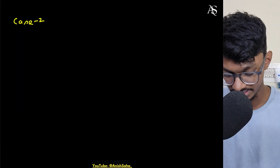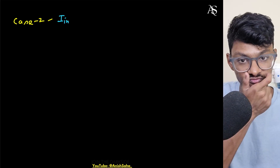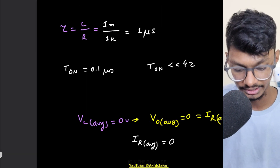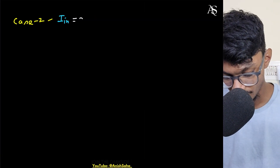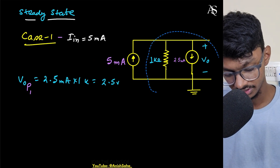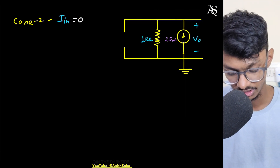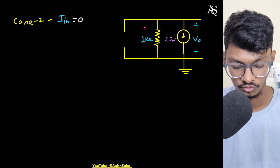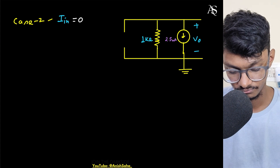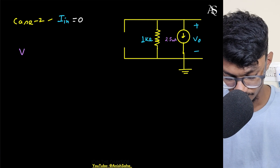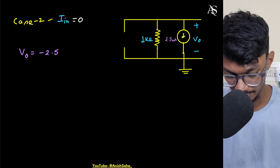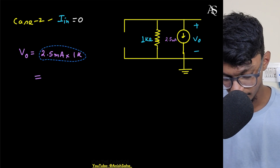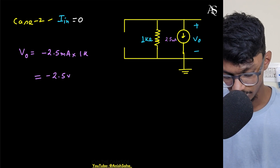Case 2: I_in = 0 (from T_on to T). The current source is open-circuited. The inductor current is still 2.5 mA, but now it flows entirely through the resistor in the opposite direction. So the output voltage is −2.5 mA × 1 kΩ = −2.5 volts. This is the negative peak.